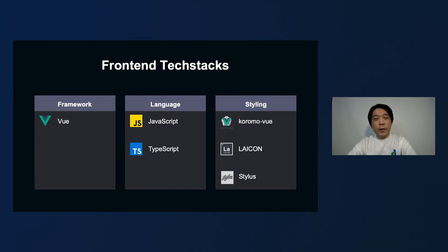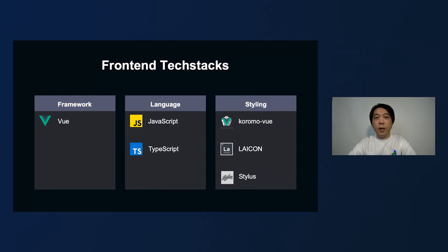Our front-end tech stack: we use Vue as the front-end framework, and our components are written in JavaScript. We have an inner library which is written in TypeScript. For styling, we use Column View, which is a styling framework based on the LINE design system, and Lycon, which is based on the same system — it's an icon library — and Stylus, a CSS language.